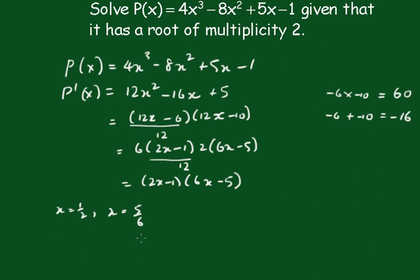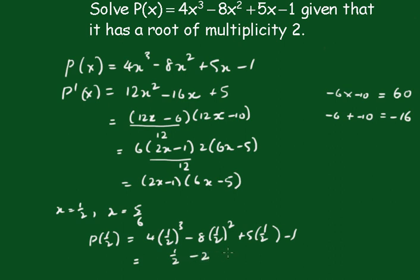We'll just check a half. Putting in a half, we get 4 times a half cubed minus 8 times a half squared plus 5 times a half minus 1. That's going to be equal to a half minus 2 plus 2 and a half minus 1, and that's equal to 0. So x equals half is the solution.